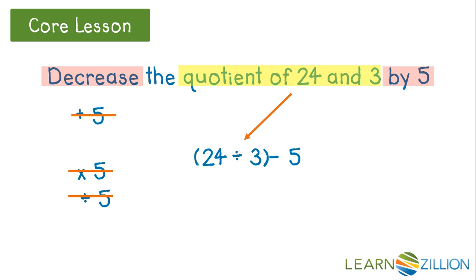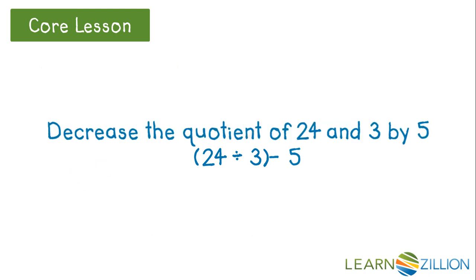We can put parentheses around the division, but we don't really have to. So this is how you write, decrease the quotient of 24 and 3 by 5 with a numerical expression.